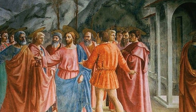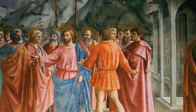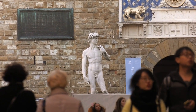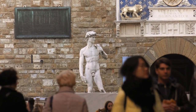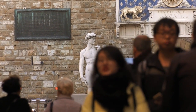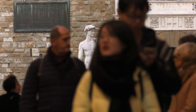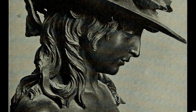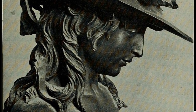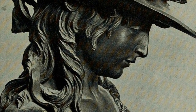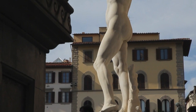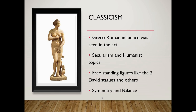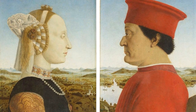In terms of classicalism coming back in, we have people doing items like Greco-Roman statues and bringing that back. We have that with the two different Davids — there's more than one. We have Donatello's Bronze David and, of course, Michelangelo's very famous Marble David. We are seeing this symmetry and balance of old classical styles of art coming back.